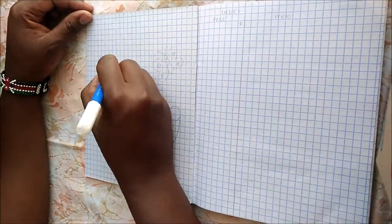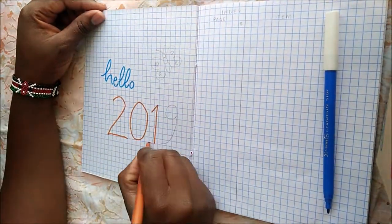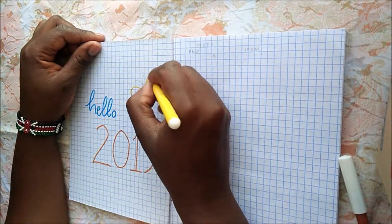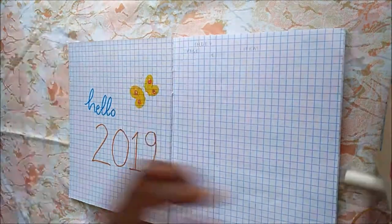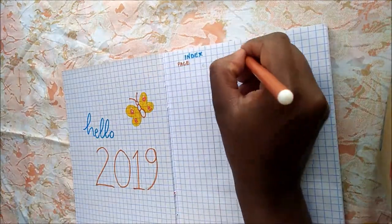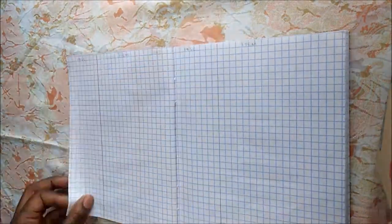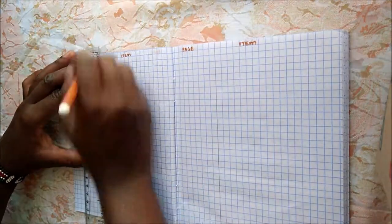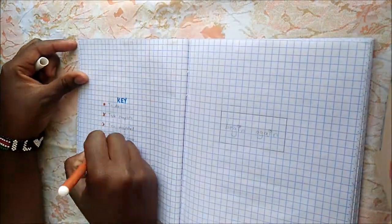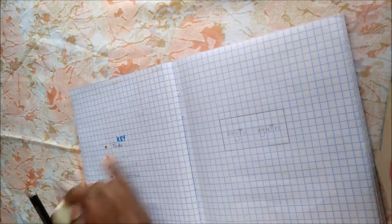I start my year by greeting 2019 with a cute butterfly flying over it just because I thought it was cute. Then I create the index having a place for the page, which is eight boxes, then the item part. This takes five pages. Then I have my key with the basic symbols.